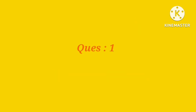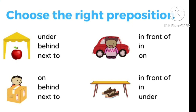Now we will do a worksheet. Let's read the first question — in this question, you have to choose the right preposition. First image kya hai? Apple ki hame position batani hai. Apple kaha hai? Is it under, behind, or next to? Ye tent type kuch bana hua hai, toh apple kahan hai — uske neeche hai. Neeche ko hum kya bolte hai — 'under'. So right preposition is 'under'.